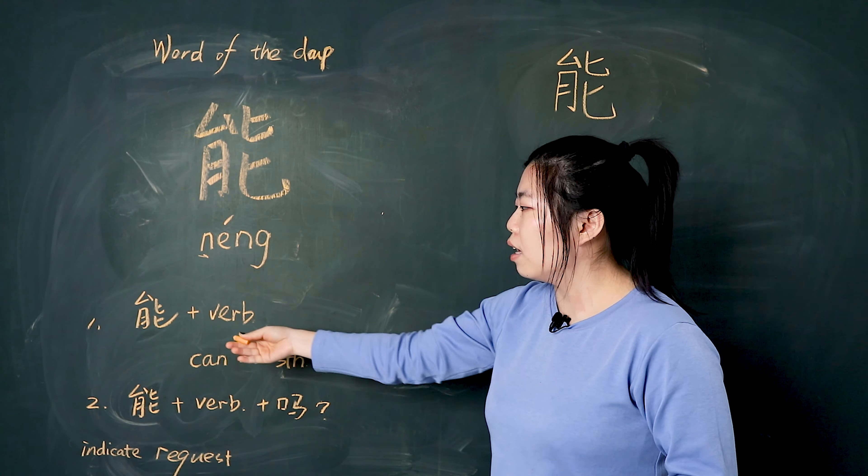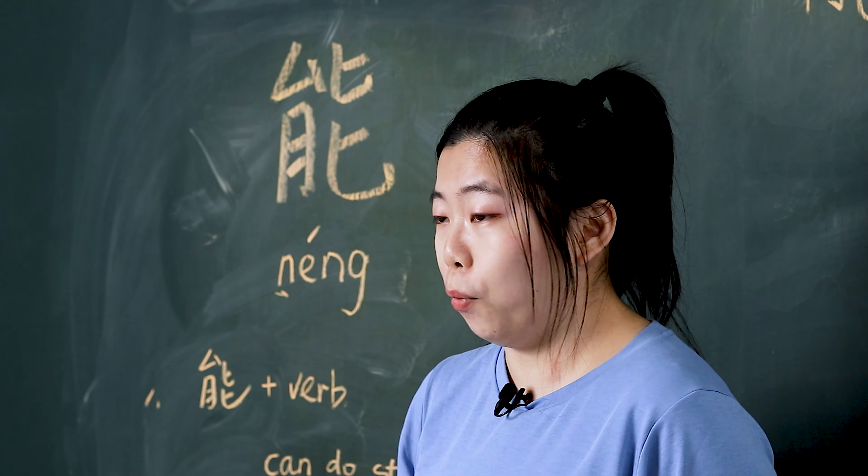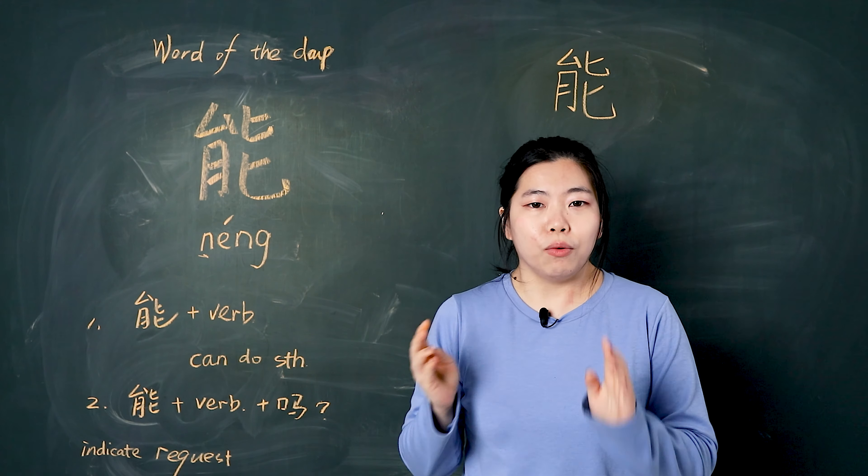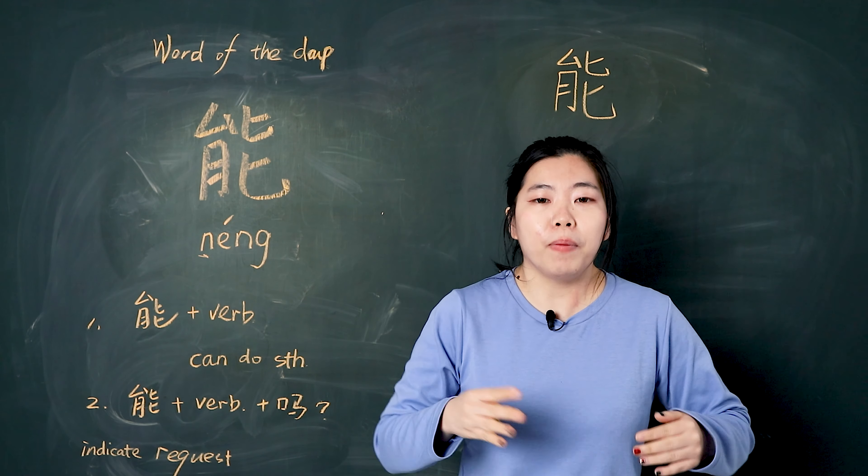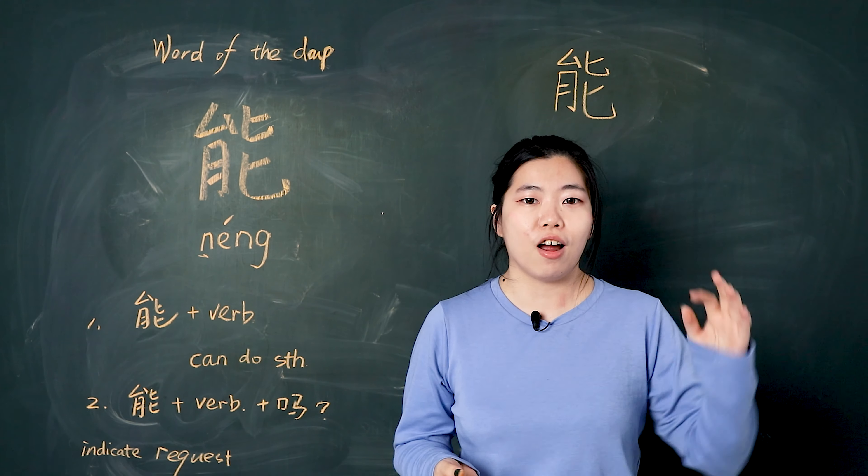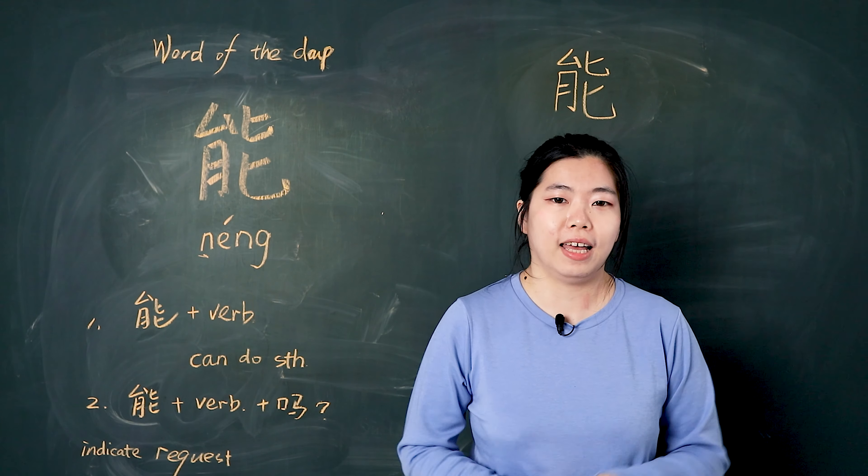First one, 能 plus a verb means can do something. For example, 我能跑步了 - I can run now. When you use this sentence, it means before maybe your leg is hurt. So now, if you are okay, recover and can do running. So we can say 我能跑步了. Okay.